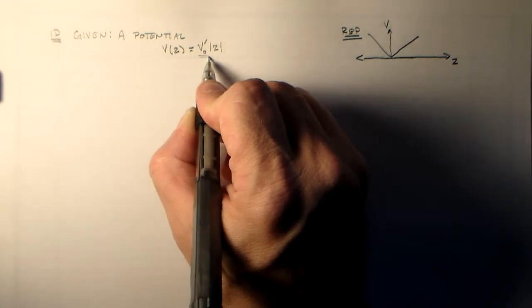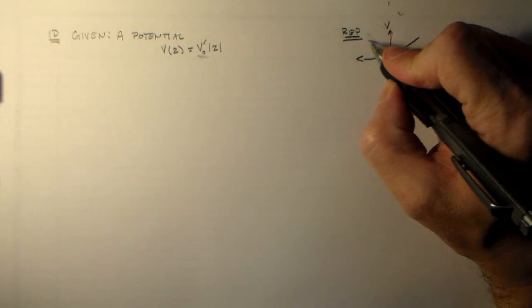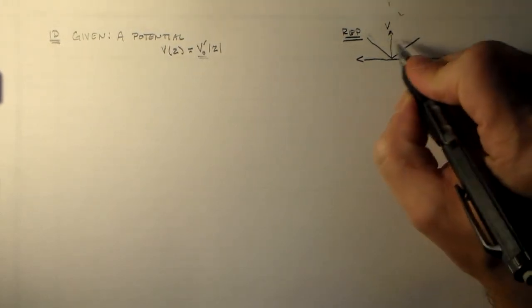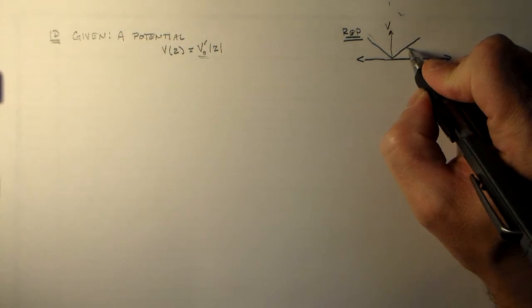Okay, so that's the reason why I used V naught prime here, is that the slope of this, which should be the same on both sides, is the same. That slope is V naught prime, right? So if we go one unit up here, we go V naught prime up here.